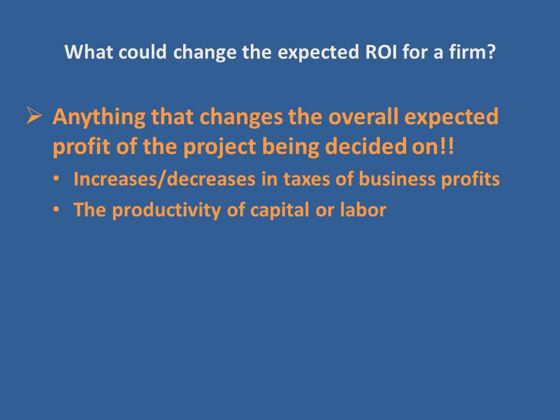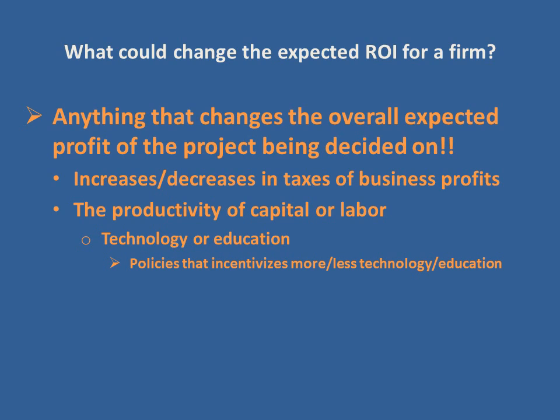If the productivity of capital or labor ends up changing, that's going to change the overall expected profit of a project. We can think of that as technology or education — increases in technology or changes in education will change the productivity of inputs and therefore the expected return on investment. More indirectly, policies that incentivize more or less technology or education — such as tax breaks on research and development or subsidization of higher education — would also affect this.